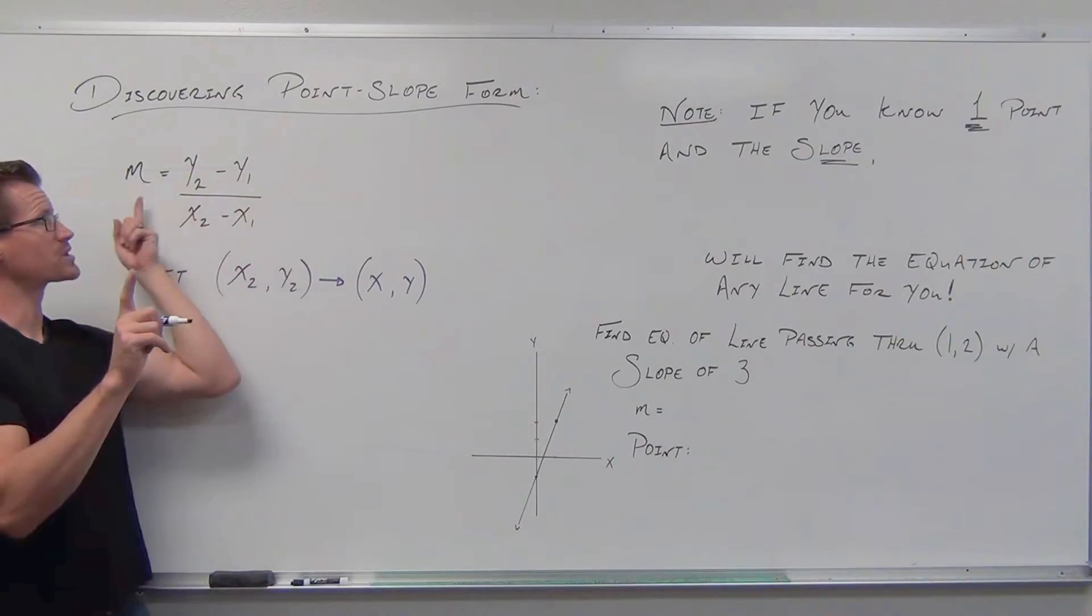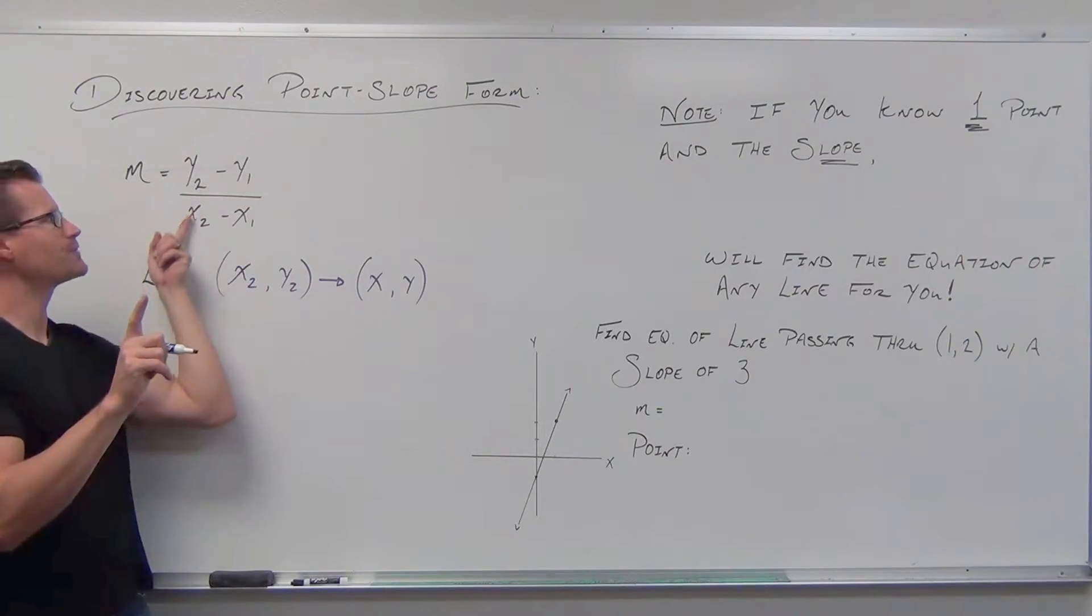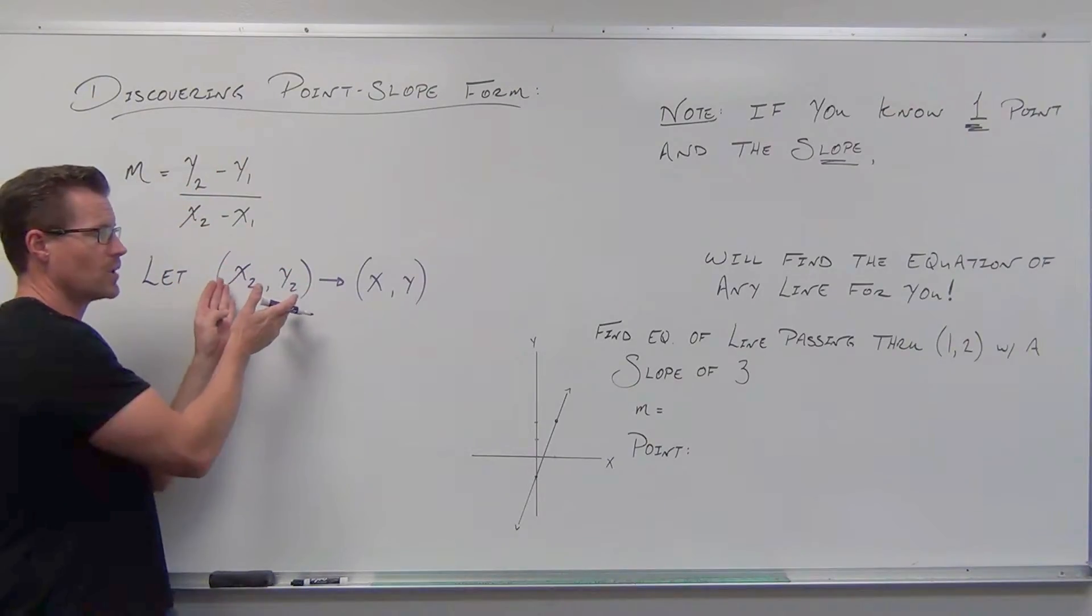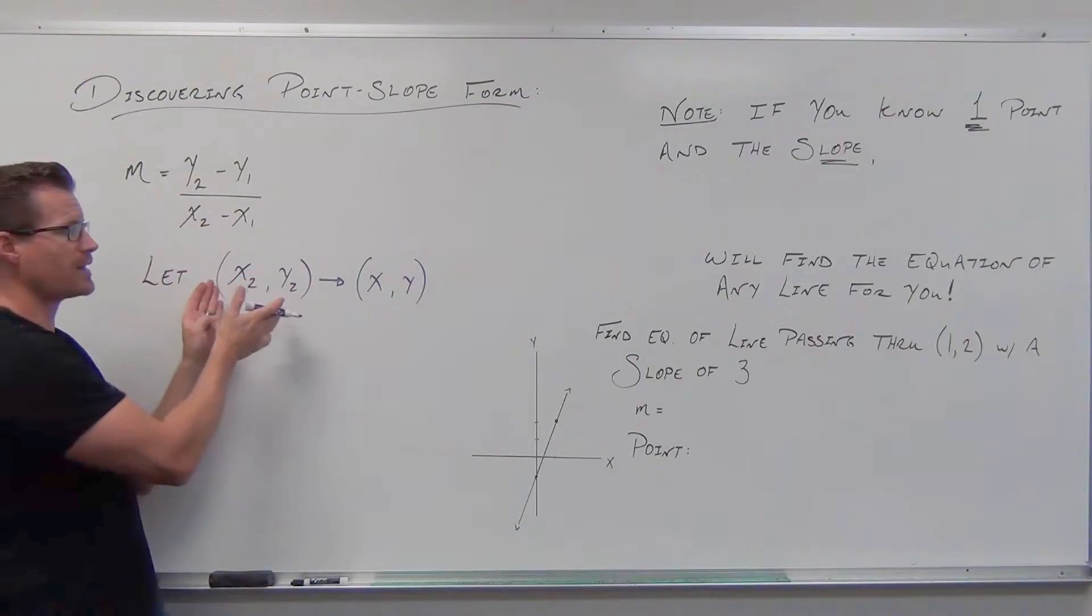What if you only know one point, but you also know the slope? Then we don't have to know the second point. We can find it. Let's unfix that, let's use the slope to find that, let's make that a variable.